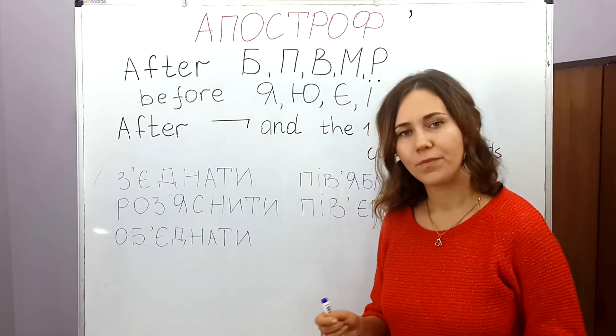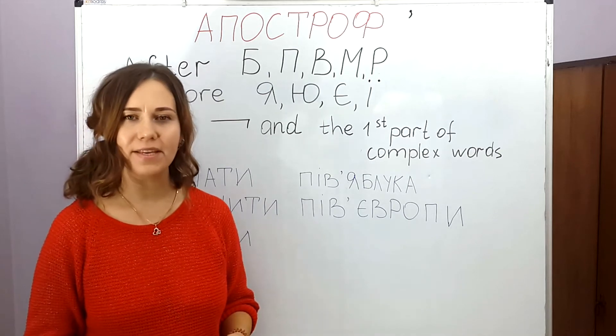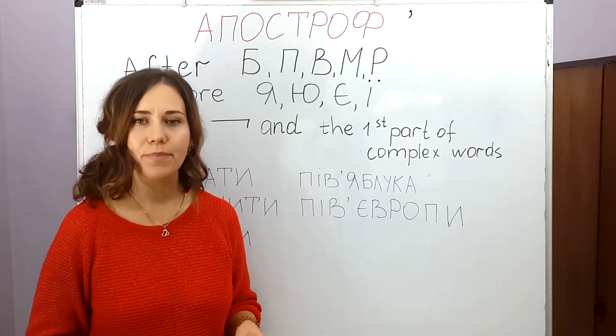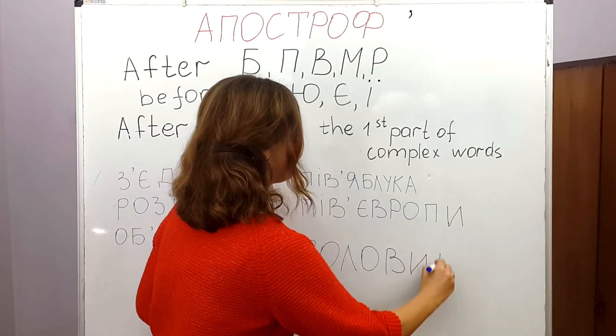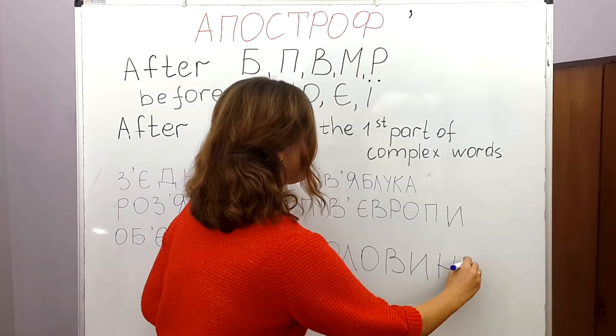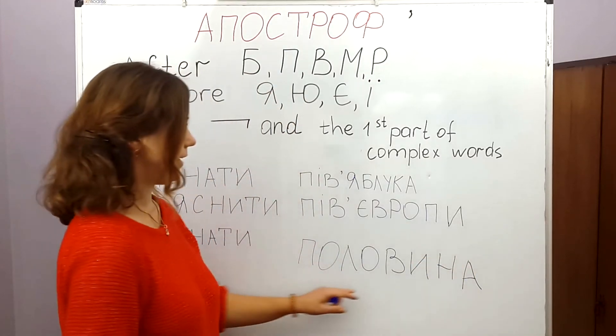Apostrophe. So we talked about it at our previous lesson and today we continue. We use it after Б, П, В, М, Р — but before Я, Ю, Є, Ї. You know already this rule. But also we use it after some prefixes and after the first part of complex words.